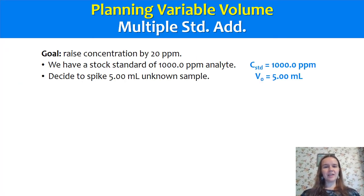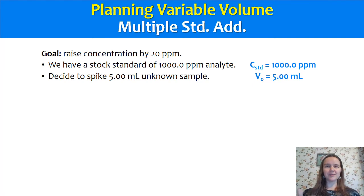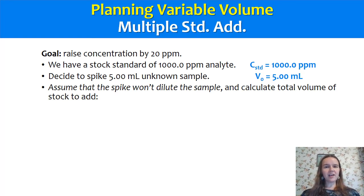Our next step in planning the variable volume is that we've decided to raise the concentration by 20 ppm. We need a concentrated stock standard — in this example a 1,000 ppm analyte — and we have to decide on a volume. This can be arbitrary: how much of your unknown sample you're going to add to. It should be enough to measure accurately, but small enough that you still have some sample left over. We had 10 mils, so I'm spiking 5 milliliters of it in case I make a mistake and want some left over. C_standard is 1,000 ppm, and our initial volume of sample V_0 is 5 mils. We assume the spike won't dilute the sample very much — that is the basis of this variable volume addition.